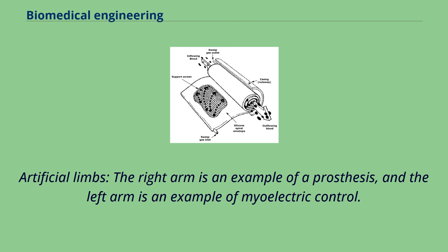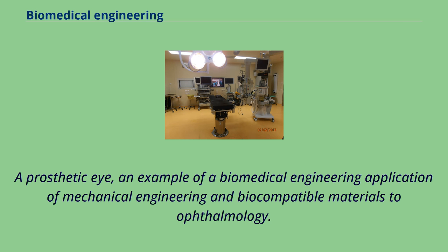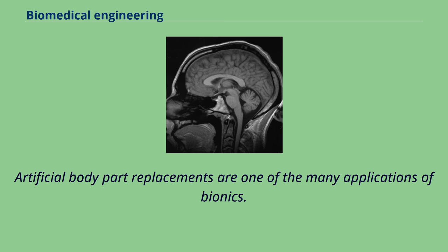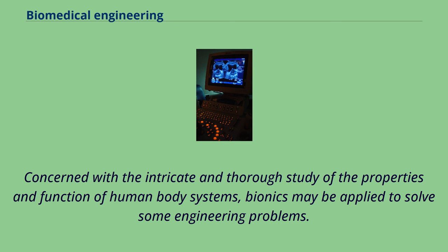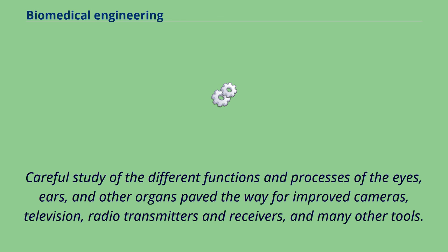Artificial limbs — the right arm is an example of a prosthesis, and the left arm is an example of myoelectric control. A prosthetic eye is an example of a biomedical engineering application of mechanical engineering and biocompatible materials to ophthalmology. Artificial body part replacements are one of the many applications of bionics. Concerned with the study of the properties and function of human body systems, bionics may be applied to solve engineering problems. Study of the eyes, ears, and other organs paved the way for improved cameras, television, radio transmitters and receivers, and many other tools.